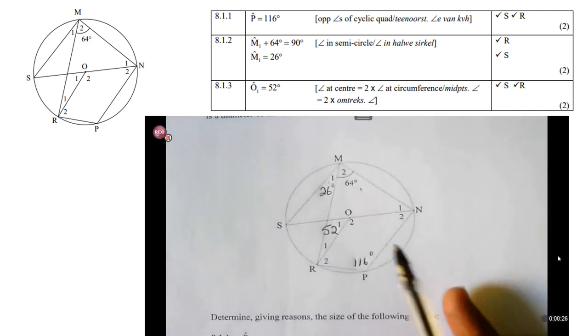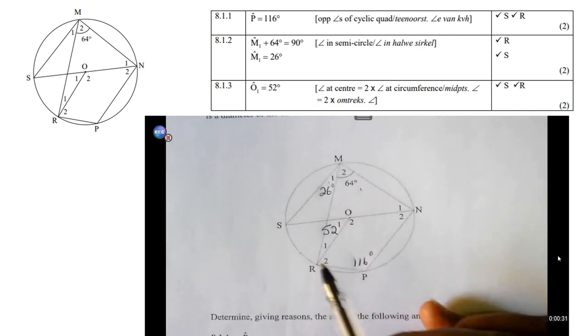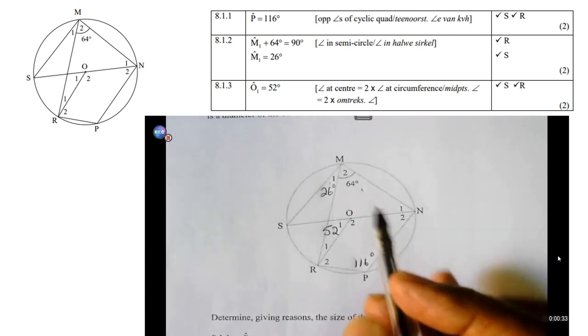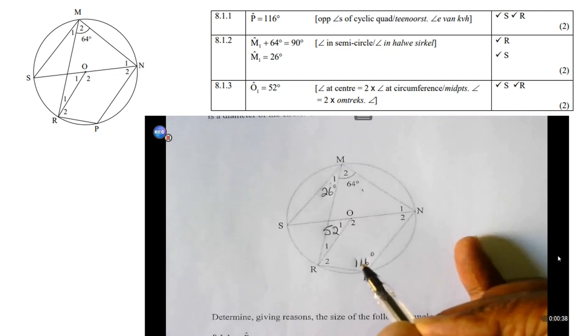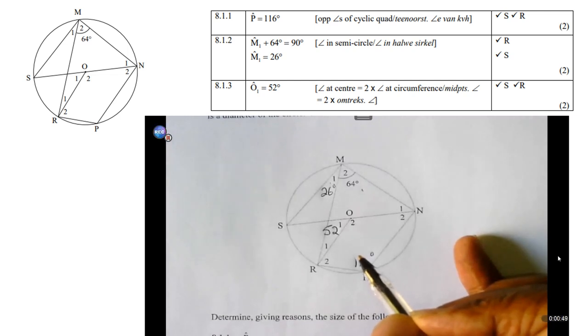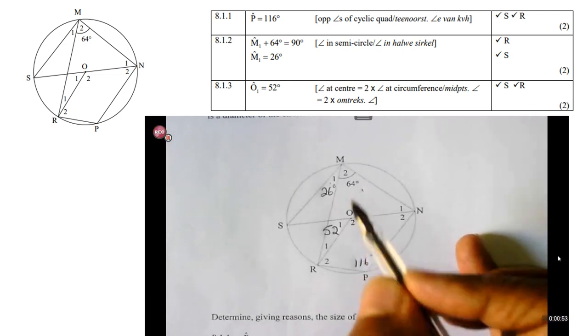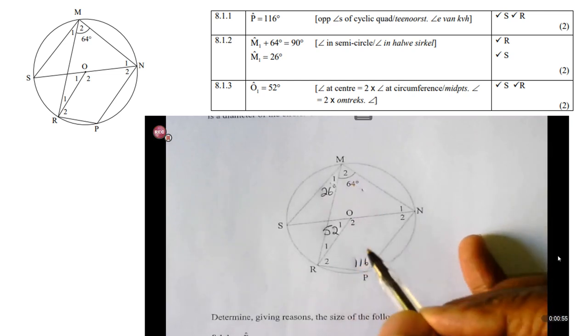If you have a close look at angle P, you will notice that P is part of cyclic quad MRPN. Angle M2 and angle P are opposite angles of a cyclic quad. You'll remember from your theorem that the opposite angles of a cyclic quad are supplementary. In other words, they add up to 180. So, therefore, if M2 is 64 given, then P should be 180 minus 64, which is 116.